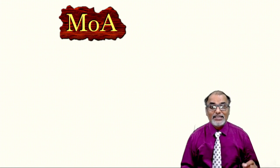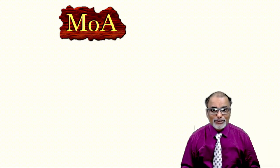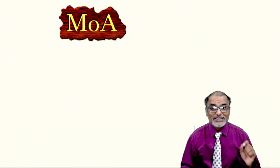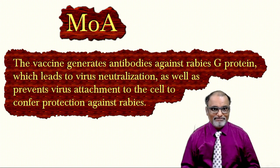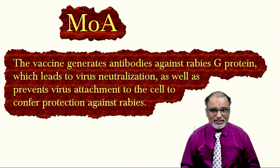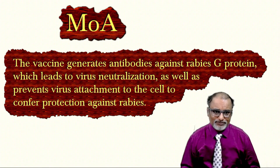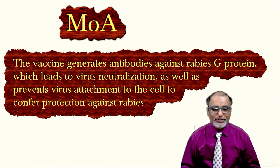The mechanism of action: the vaccine generates antibody against G protein. That antibody firstly neutralizes the virus, and secondly it prevents the entry of the virus into cells. So there is no infection, which confers protection against rabies.